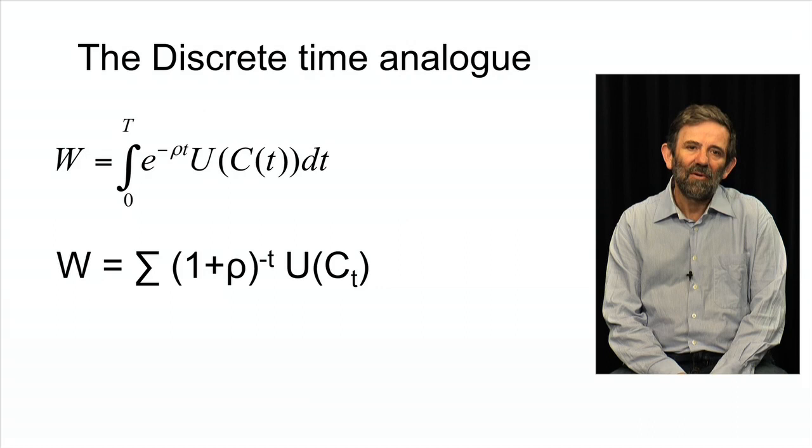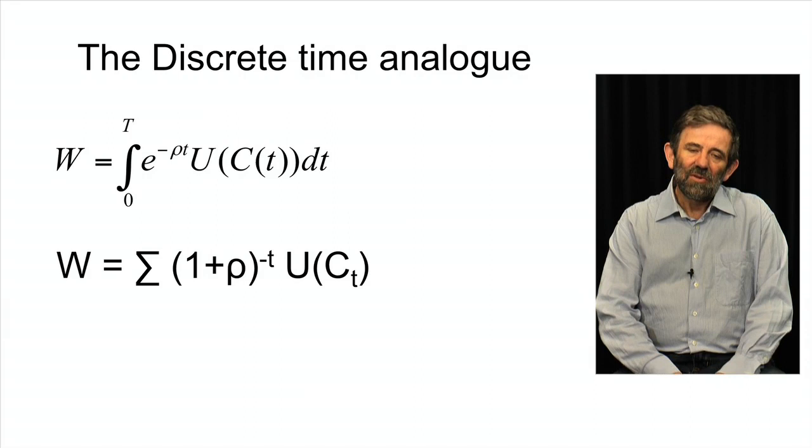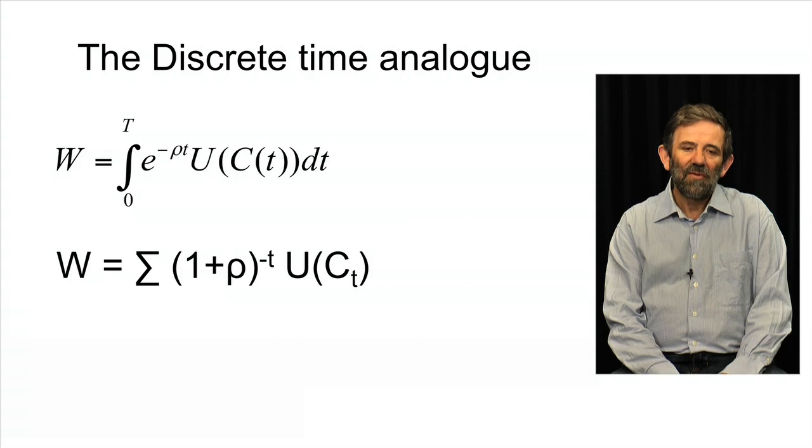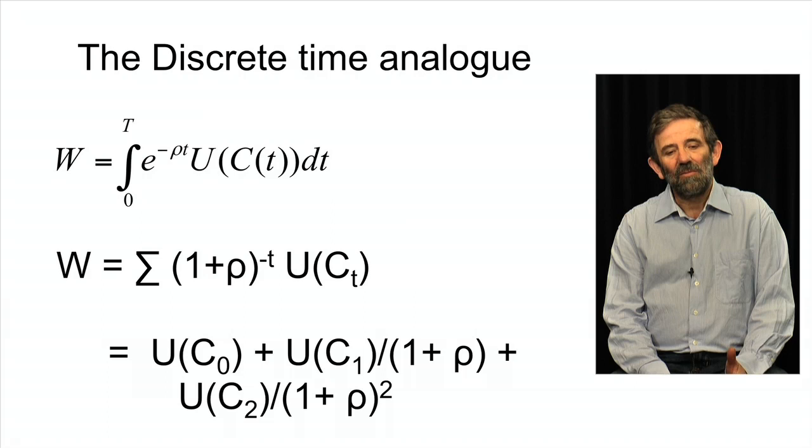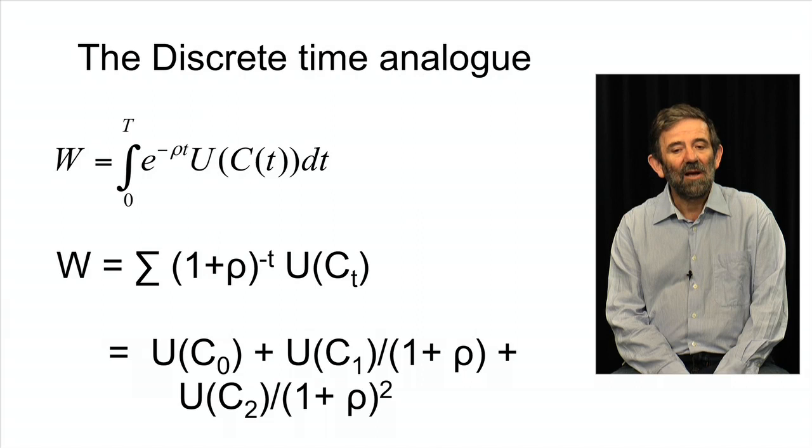It's perhaps easier to see this in a discrete time formulation where you can see that we have a stream of say consumption every year, C_t, and then the utility we get from that is U of C_t, and welfare is simply the sum of the utility we get from this year's consumption plus the utility we get from next year's consumption divided by this discount factor, the utility discount factor ρ, and so forth.